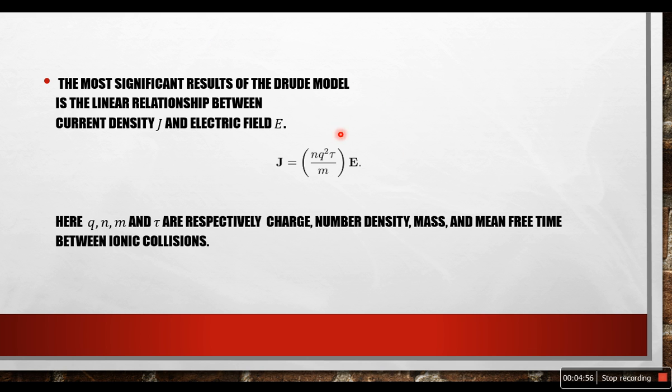The most significant result of the Drude model is the linear relationship between current density J and electric field E, which can be expressed as J equals N into Q square into tau by M into E. Where Q is charge, N is the number density, M is the mass and tau is the mean free time between ionic collisions. However, we will not discuss the details of this equation. We will just use it today.